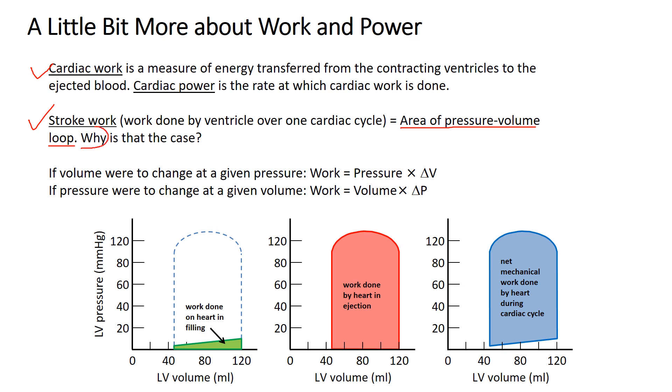Why is the area of the pressure-volume loop equal to the stroke work? It's most important that you understand and know that the area of the pressure-volume loop is equal to the stroke work. Why is not as important, but let's try to understand it nonetheless. Remember, pressure is a mechanical energy density, energy per unit volume. If you add volume to a system at a given pressure, the work done is equal to the pressure times the change in volume. If you add pressure to a system at a given volume, the work done is the volume times the increase in pressure. More generally, work is the sum or the integral of pressure times volume.